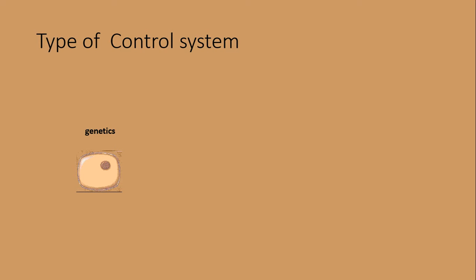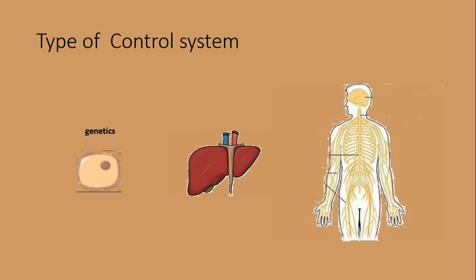Many other control systems operate within the organs to control functions of the individual parts of the organs. Others operate throughout the entire body to control the interrelations between the organs.